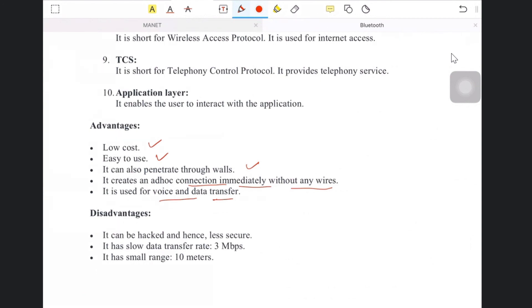If I talk about the disadvantages, obviously security reasons are there, so it can be hacked and hence is less secure. Slow data rate because up to 3 Mbps maximum we can achieve. The range is 10 meters, so for large distance clear communication cannot be established. Most applications depend upon Bluetooth, but this area coverage is less than 10 meters.